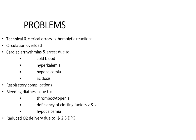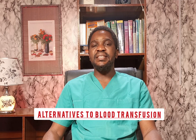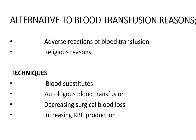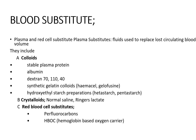Alternatives to blood transfusion are sought to prevent adverse reactions associated with transfusion and for religious reasons. Options include autologous blood transfusion, blood substitutes, decreasing blood loss during surgery, and increasing RBC production. Blood substitutes could be plasma substitutes or red blood cell substitutes. Plasma substitutes are either crystalloids or colloids. Red blood cell substitutes include perfluorocarbons and hemoglobin-based oxygen carriers.